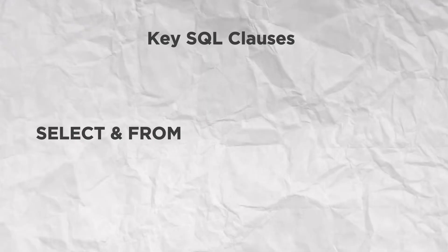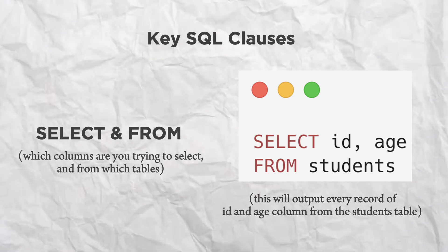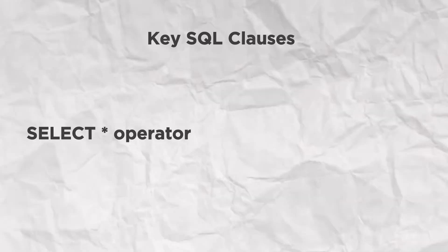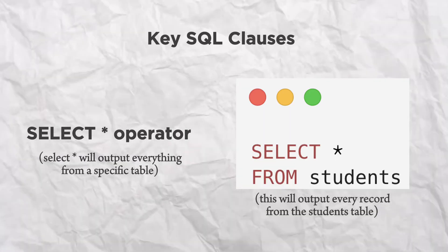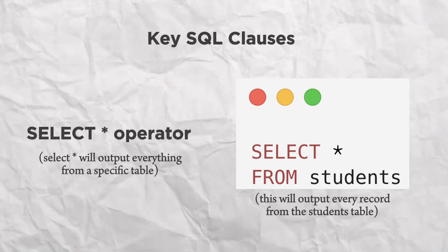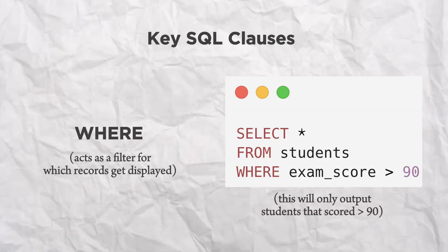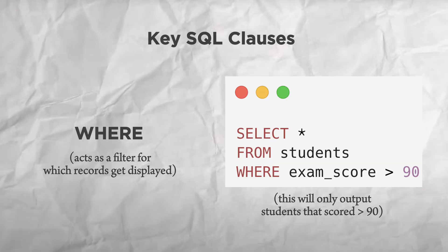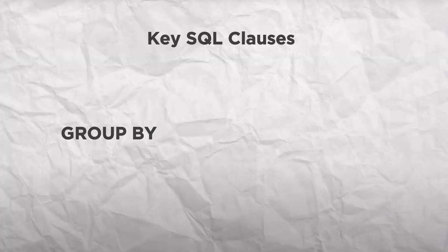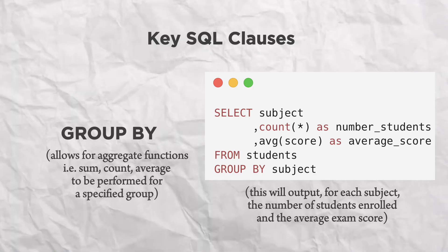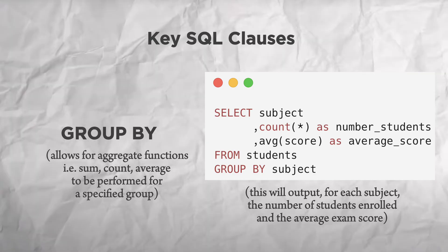Firstly, the basics: SELECT and FROM, which form the basis of all SQL queries — what are you trying to select and from which tables? If you just want to explore what is in a table, you can do SELECT *, which will return all the columns. I often do this with a LIMIT 10, so I only pull the top 10 records. We then have a WHERE clause, which filters out which records show up. You can also order your output by specific columns using ORDER BY, and there is also GROUP BY, which allows you to perform functions like SUM, COUNT, or AVG to get summaries for each group.